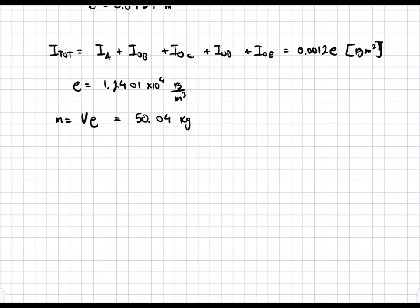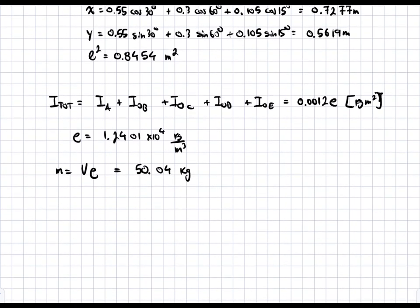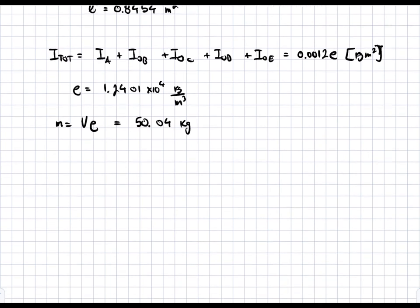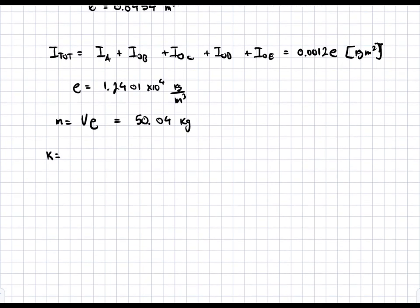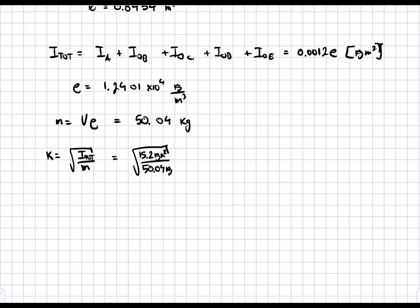I skipped the plugging in because it takes a lot of space, but if you plug it in you get that value. Once we have this mass, we can finally solve for the radius of gyration. K = √(I_total / mass) = √(15.2 kg·m² / 50.04 kg). So K is equal to 0.55 meters, which is the radius of gyration.